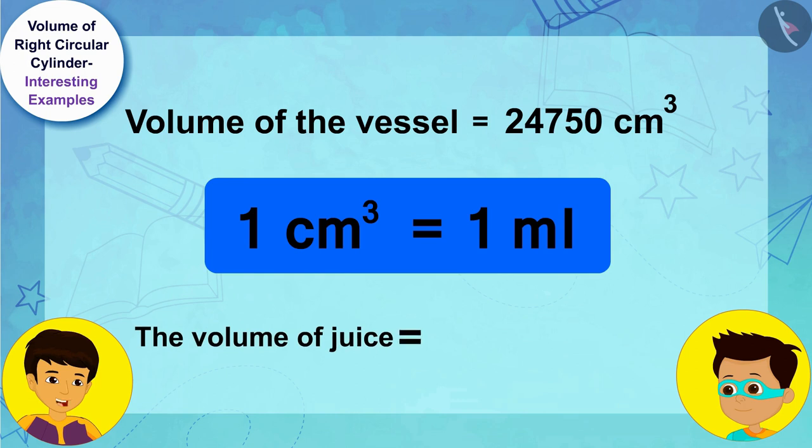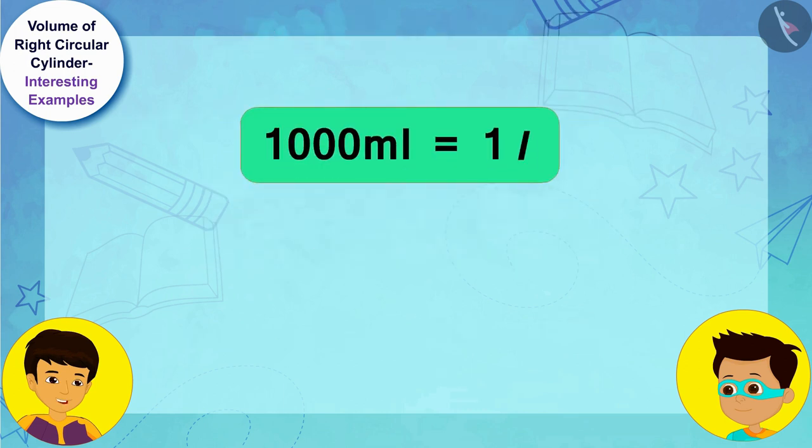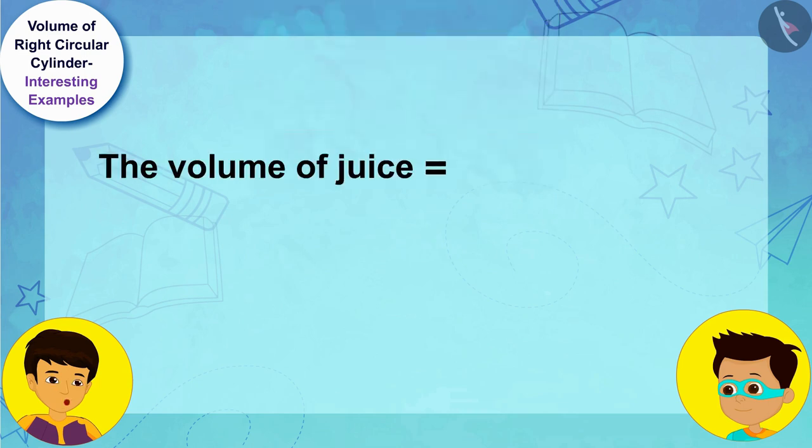And because 1000 milliliters is equal to one liter, the volume of the juice is 24,750 divided by thousand, that is 24.75 liters.